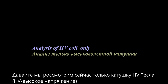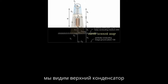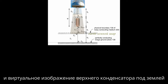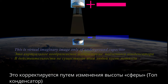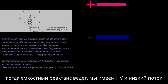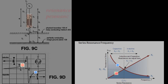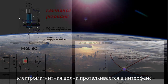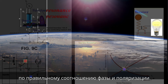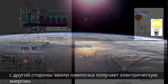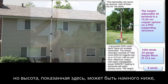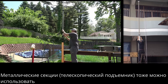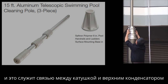In a single high-voltage Tesla coil we have a capacitor, coil, ground, and image of the top capacitor created underground. The top capacitor and the ground create a variable capacitor that is regulated by changing the elevation of the sphere with regard to the ground. When capacitive reactance is leading we have high voltage and low current. XL cancels XC in series resonance. The electromagnetic wave is pushed into the interface between earth and air by the proper phase relation and wave tilt angle, known as the Brewster angle. Metal telescopic mast is much better as we don't need a wire to connect the top capacitor to the top of the coil.